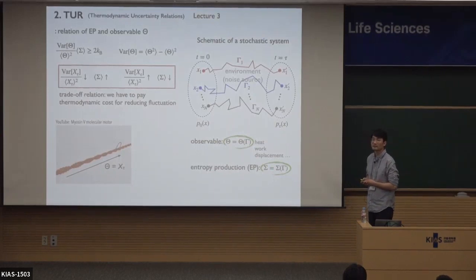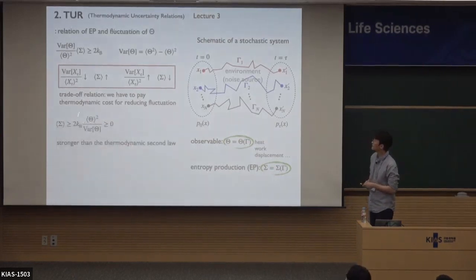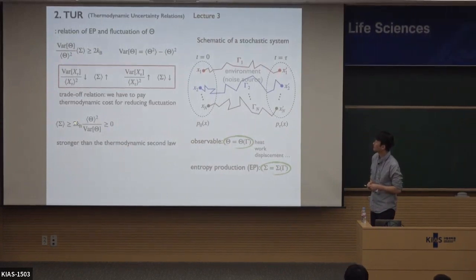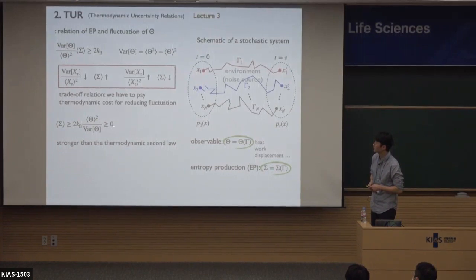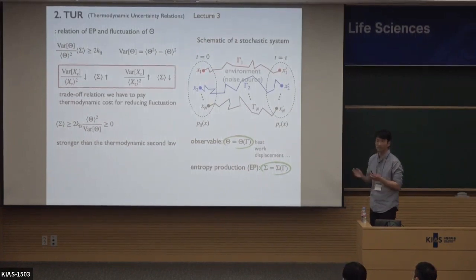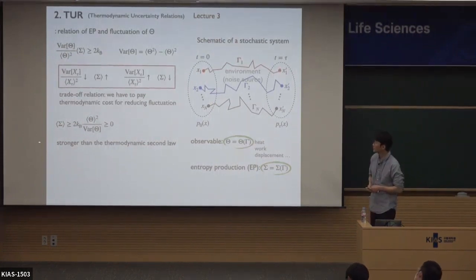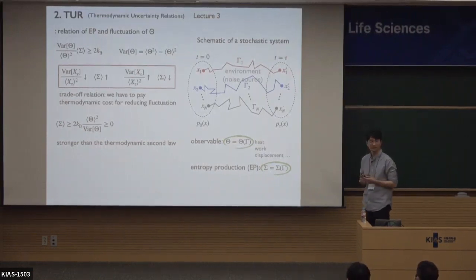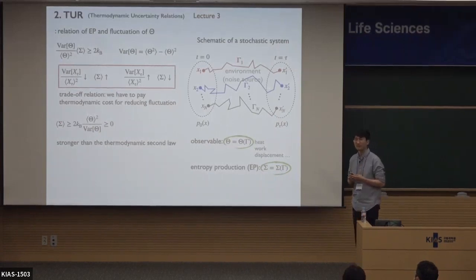If we rearrange the thermodynamic uncertainty relation, we get a bound on entropy production. The thermodynamic second law just tells us entropy production is larger than zero, but TUR tells us entropy production is larger than some positive value. So TUR gives a stronger bound than the thermodynamic second law — this is the importance of TUR from a theoretical viewpoint.